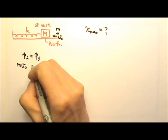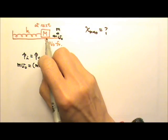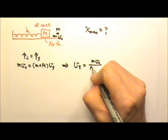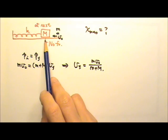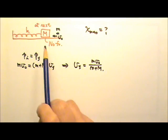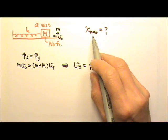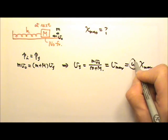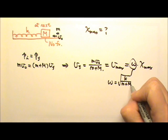Initially, only the bullet has momentum. After the bullet embeds in the block, they reach a final velocity of m·v₀ divided by (m plus M). Because initially the block is at rest, the spring is relaxed, meaning at the end of the collision — the beginning of the oscillation — the bullet-block combination is at the equilibrium position. That means this speed is the maximum speed. To find the amplitude, we set this equal to omega times the amplitude, where omega is the square root of k over (m plus M).